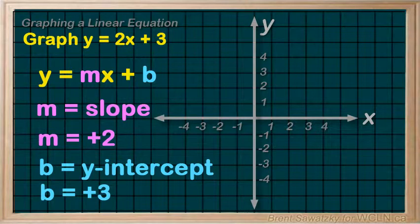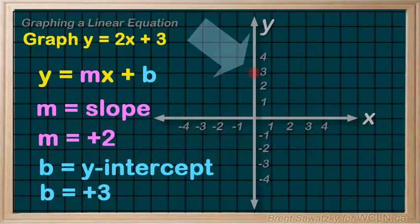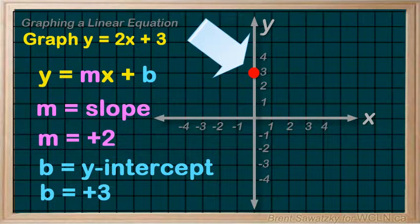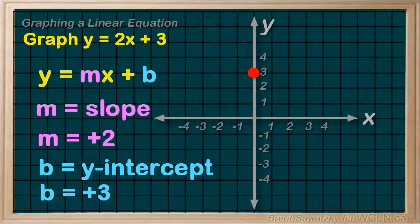To graph this one, we can first of all plot the y-intercept here at plus three. That is, the line will be intercepting or crossing the y-axis right here.